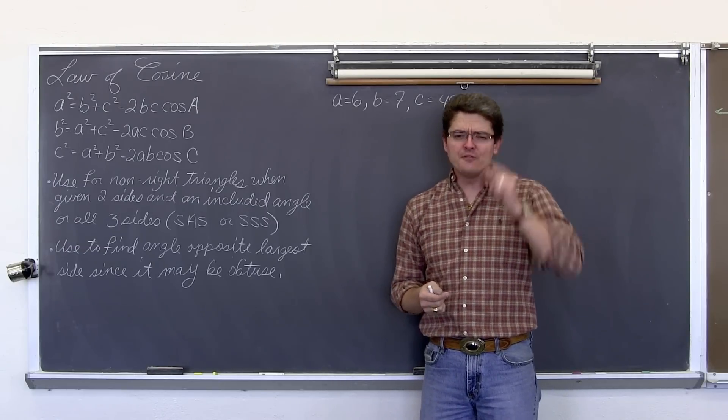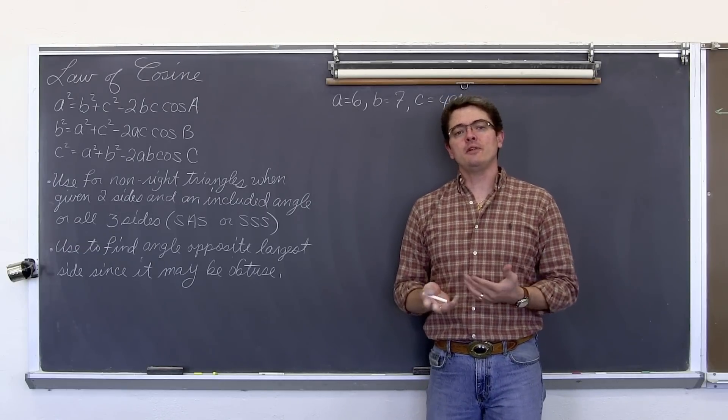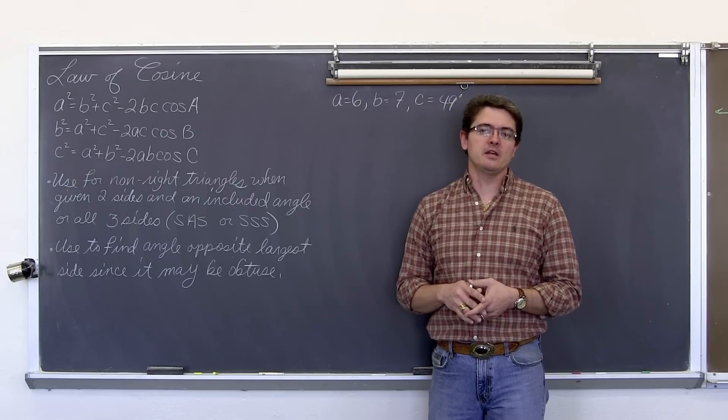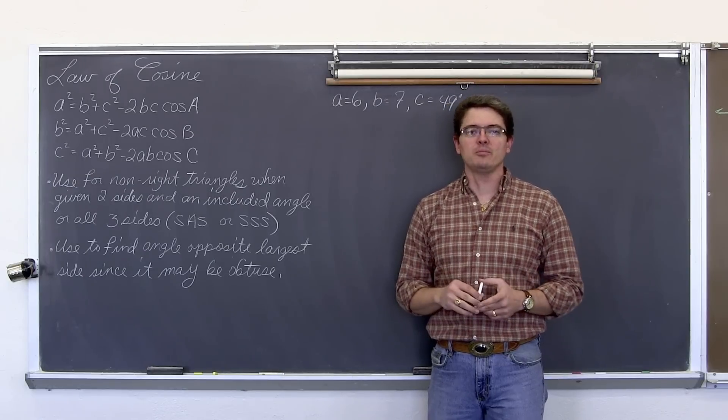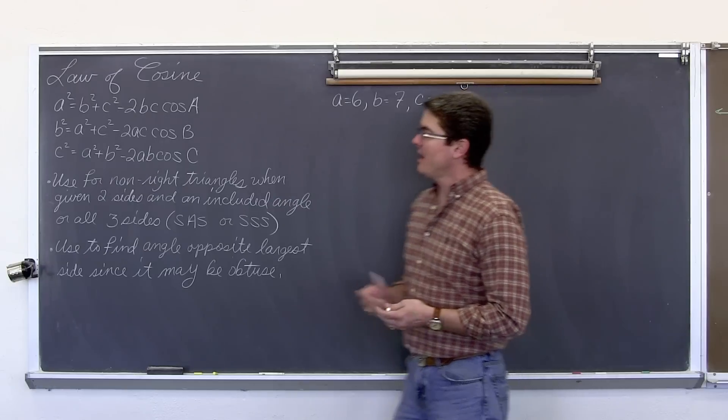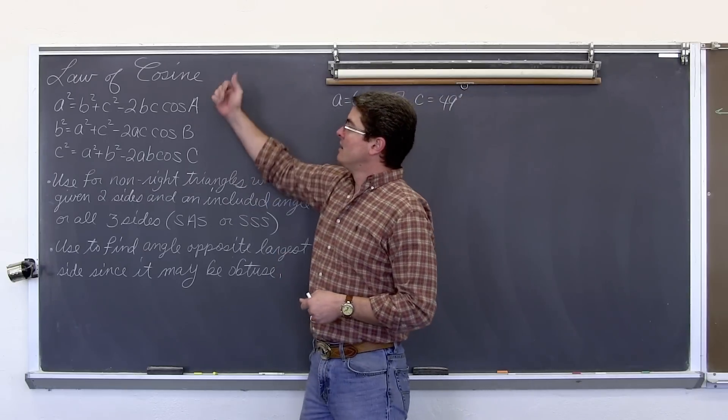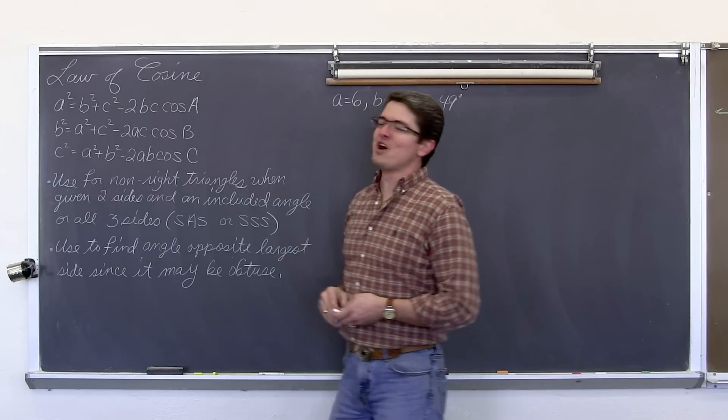However, if you don't have that then hopefully the law of cosine will allow you to finish or solve that oblique triangle. Finding the missing angles in sides and possibly even area with a different formula. So we have law of cosine.